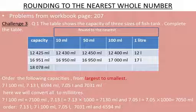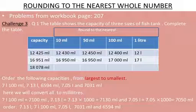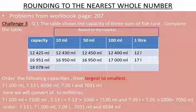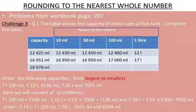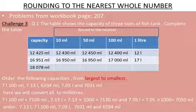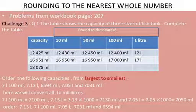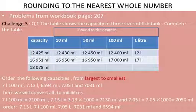Now we will discuss a problem from workbook page 207, challenge number 3, question number 1. A table gives the capacities of three sizes of fish tanks. You must complete the table by rounding to nearest 10 ml, nearest 50 ml, nearest 100 ml, and nearest 1 liter. For rounding to the nearest 50 ml: if the last two digits are 25 or more up to 49, round up to 50; below 25, round down to 0.